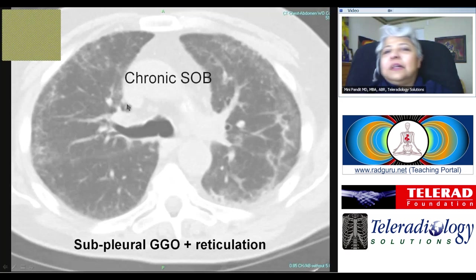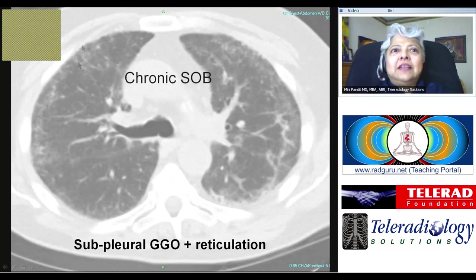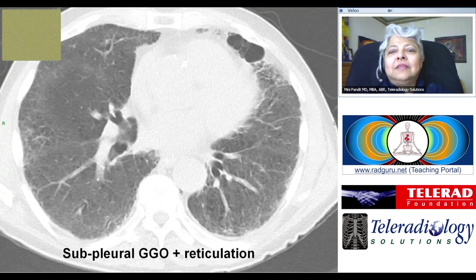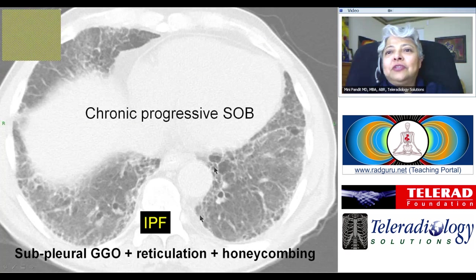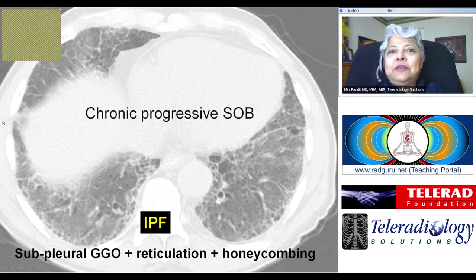Here's a patient with chronic shortness of breath showing subpleural ground glass opacities with some areas of reticulation. The differential is a long list — all you can say is describe the finding and suggest the differential diagnosis. Another patient has subpleural ground glass and more prominent reticular opacities, which lower down shows the patient developing honeycombing. This patient has idiopathic pulmonary fibrosis.